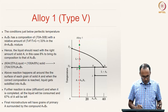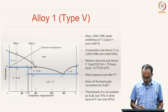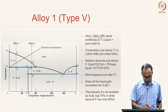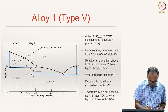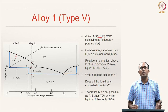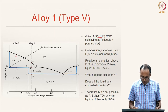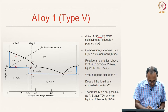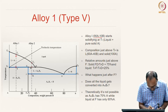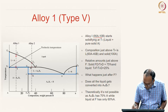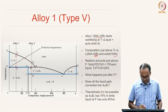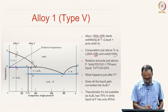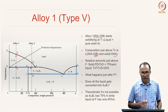Now let us look at Alloy 1, which is 90% A and 10% B. It starts solidifying at temperature T₁. Then it solidifies into liquid plus pure solid A—this is like our Type 2 alloys. The moment it reaches position F just above T_p, the liquid composition is 40% B and the solid is 100% A, so it has reached the peritectic reaction temperature.